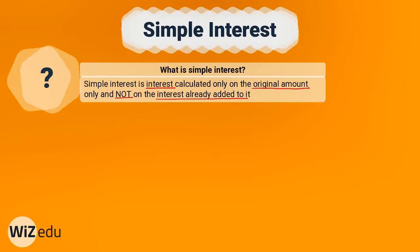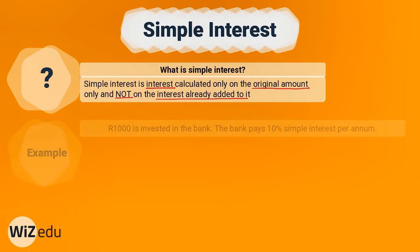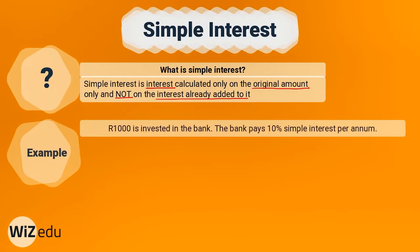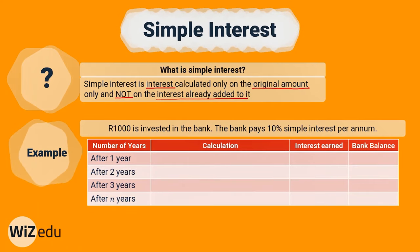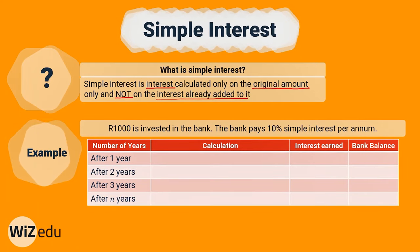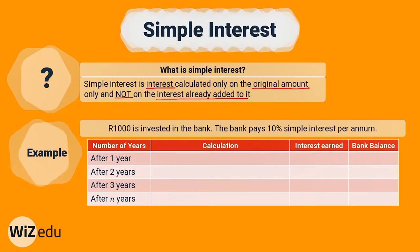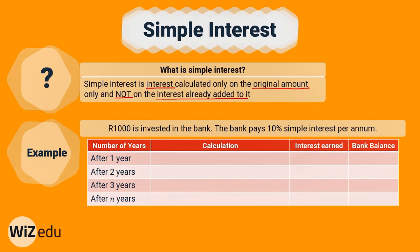So just to visualize simple interest, we'll take an example. We have 1,000 Rand invested in a savings account and the bank pays us 10% simple interest per annum. So how would our bank balance look after a certain number of years?